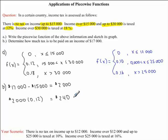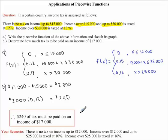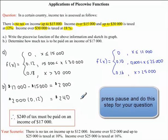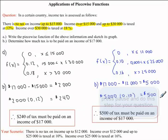All we need to do now is write our concluding statement. Therefore, $240 of tax must be paid on an income of $17,000. I would now like you to answer Part B for your question. In your question, you should have to pay $500 of tax.